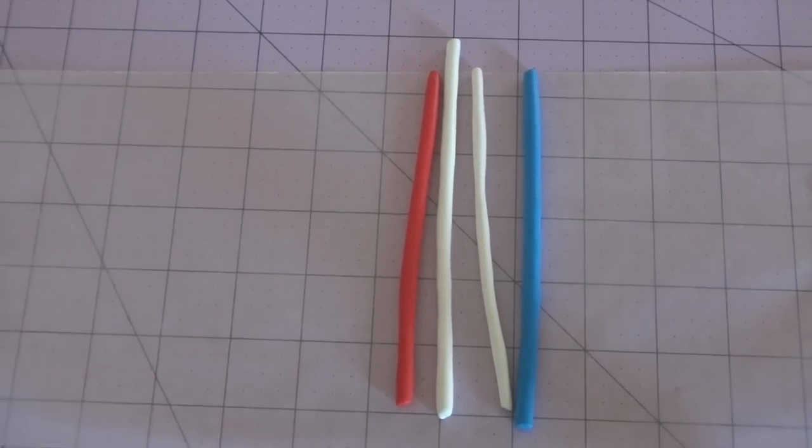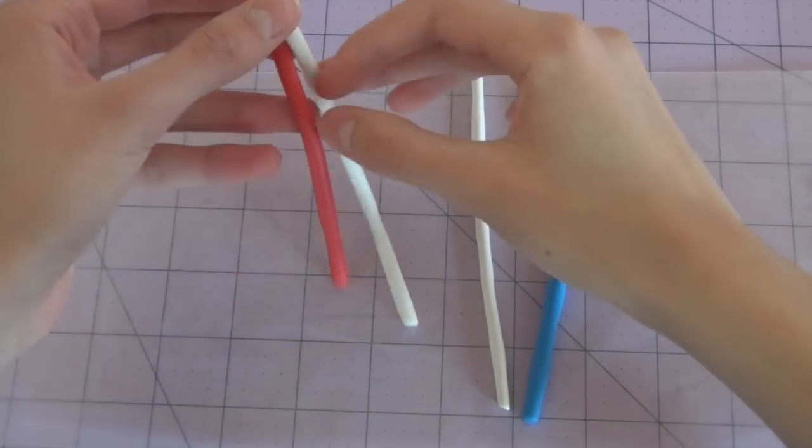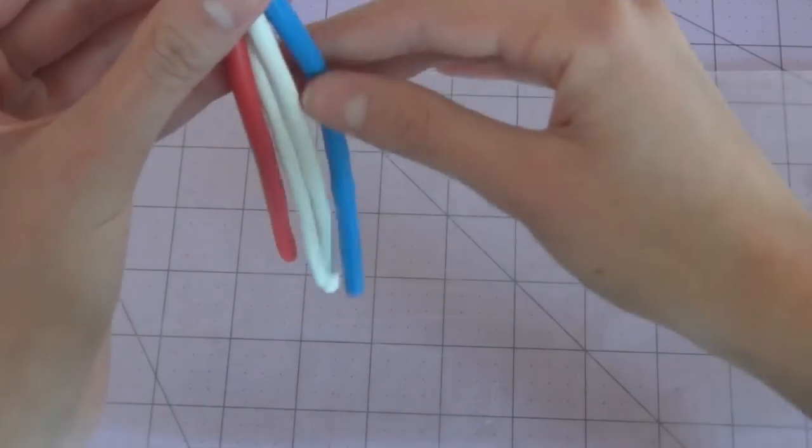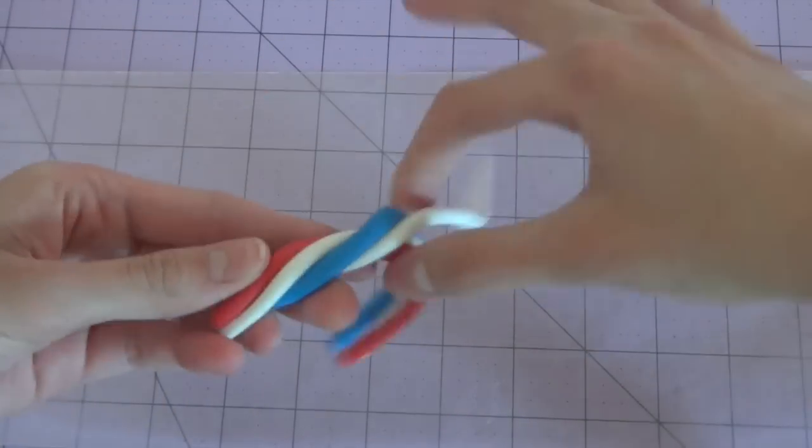Once you have all of your strands done and they're around the same size, you're going to kind of connect them at the top by just pinching them a little bit and then you're going to twist them all around.